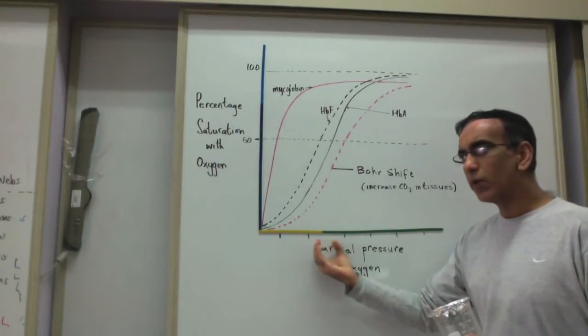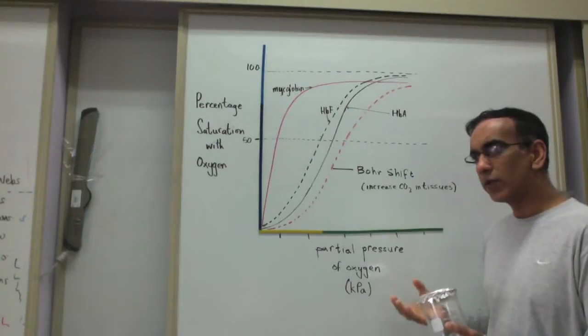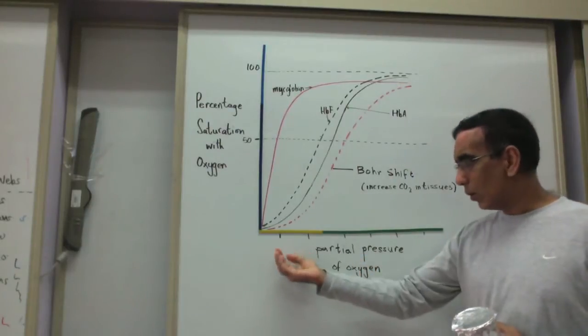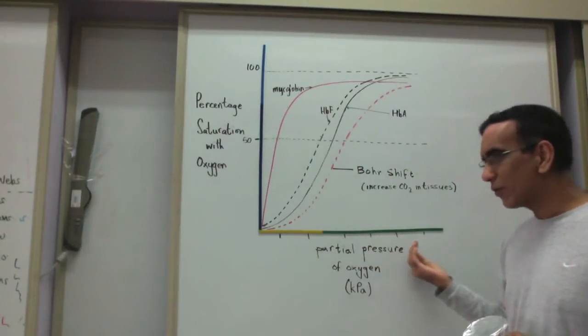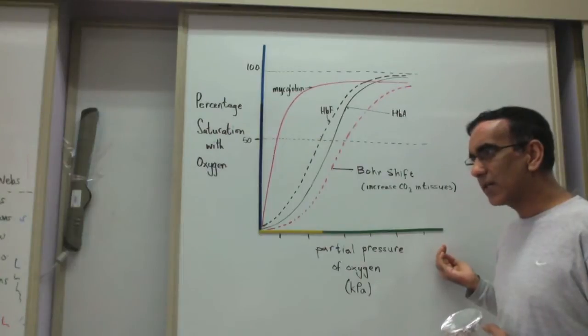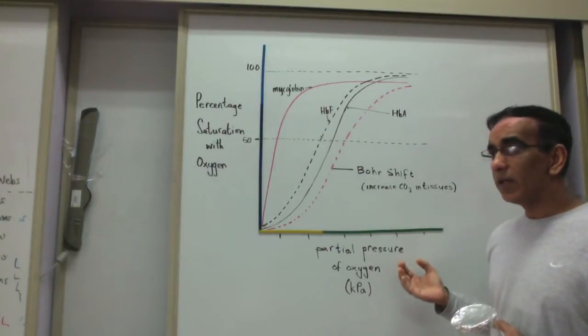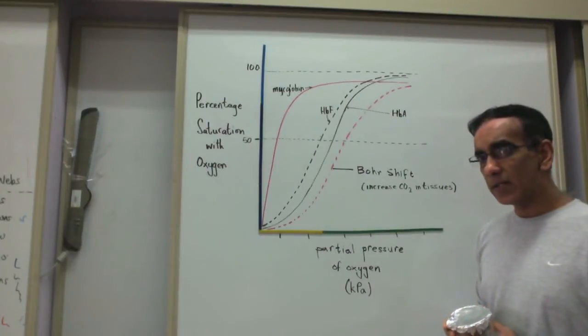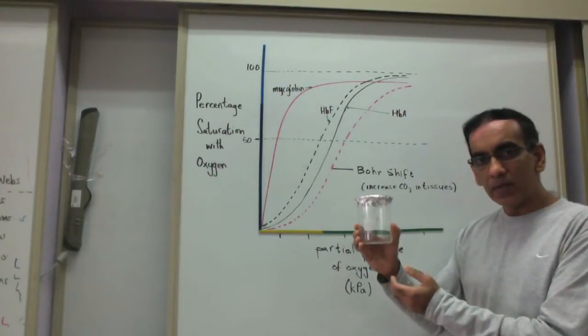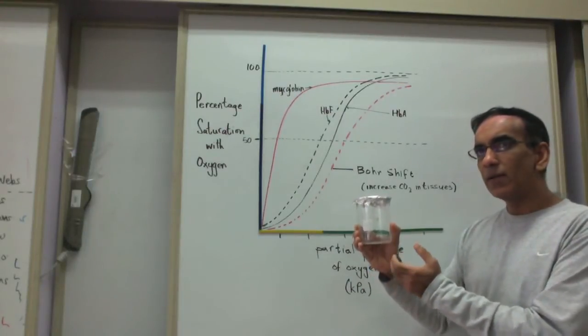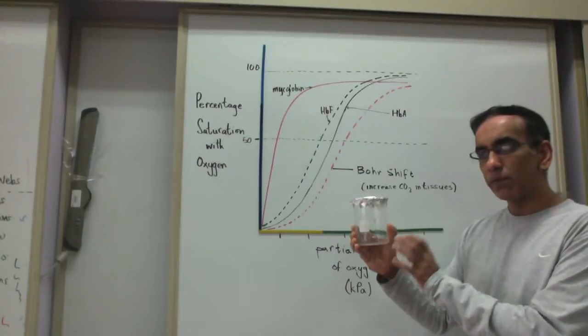This axis usually poses a source of confusion for students. The question is often asked, what is the purpose of measuring pressure on this axis when we speak of concentration of gases? Well, let's take this beaker, for instance, and use it to understand the meaning of the term partial pressure.